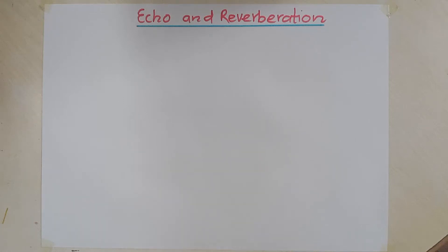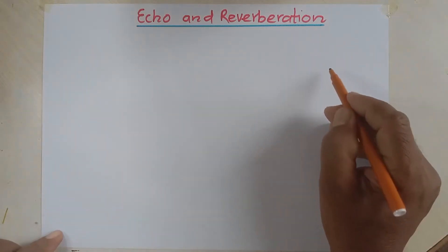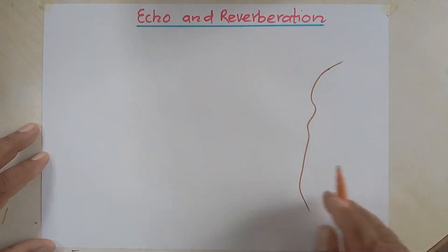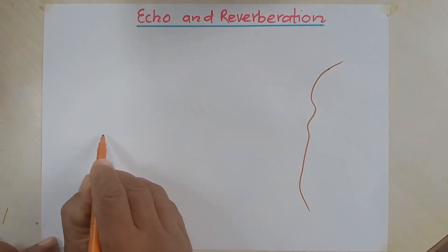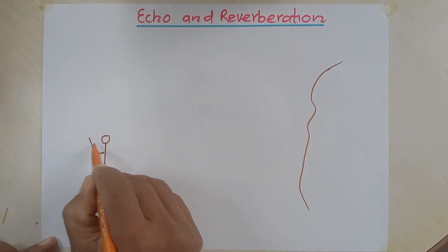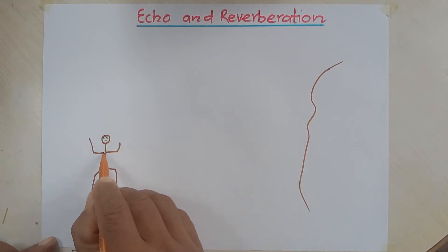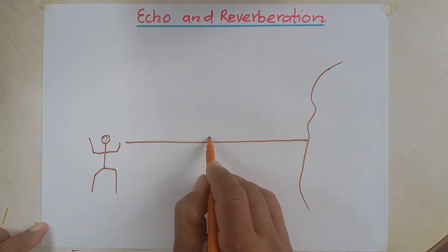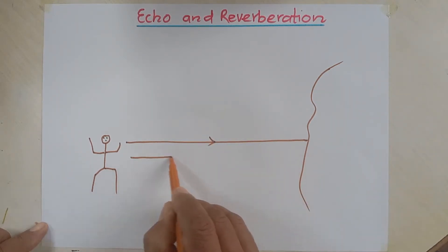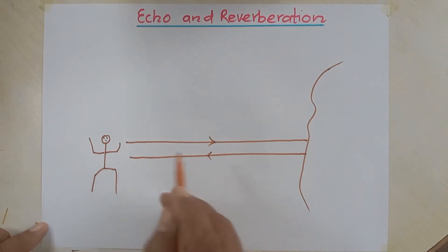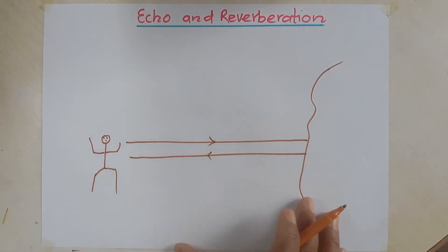Today I want to talk about echo and reverberation — exactly what it is and how it occurs. Let's say this is our sound reflecting surface, maybe the surface of a hill or any other surface. If a person is standing in front of it at a certain distance and makes a loud sound, the sound travels in the form of a wave up to this surface and returns back by the reflection of sound through this surface.